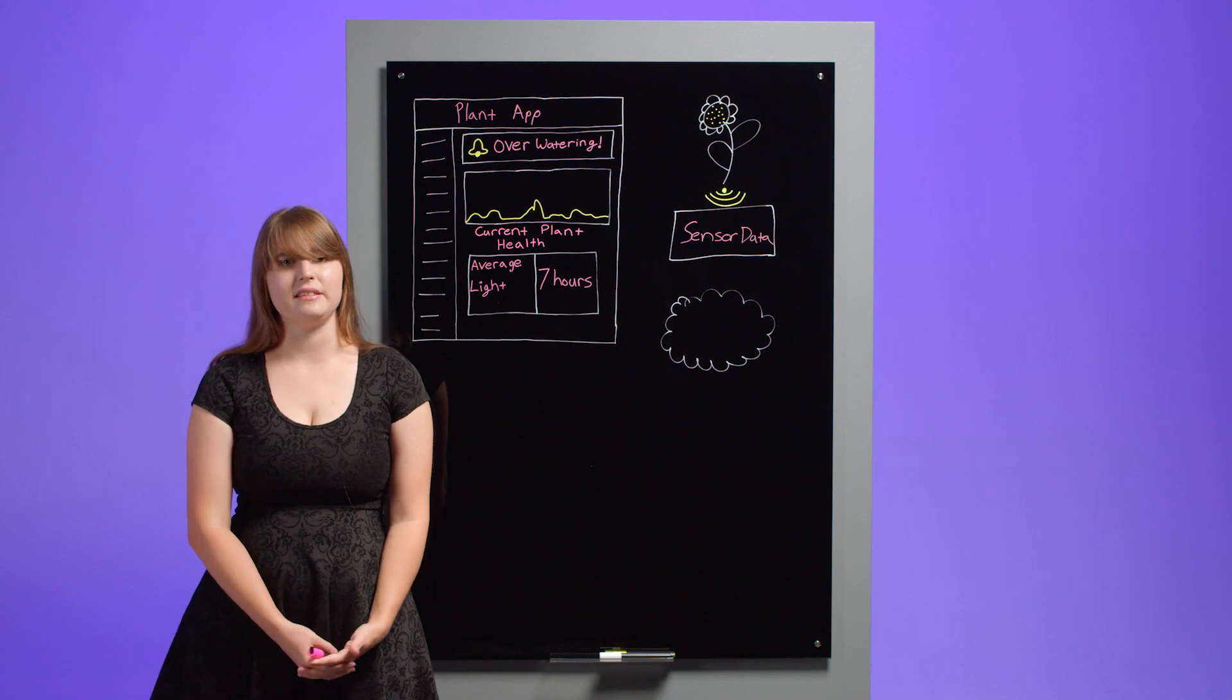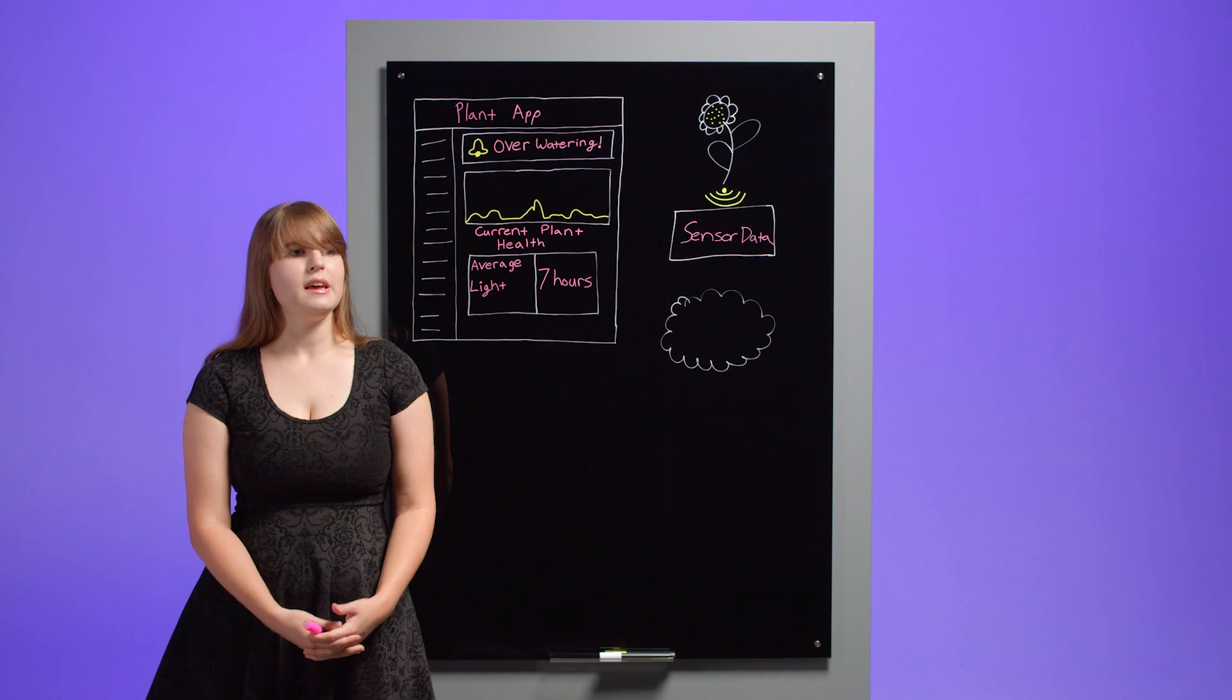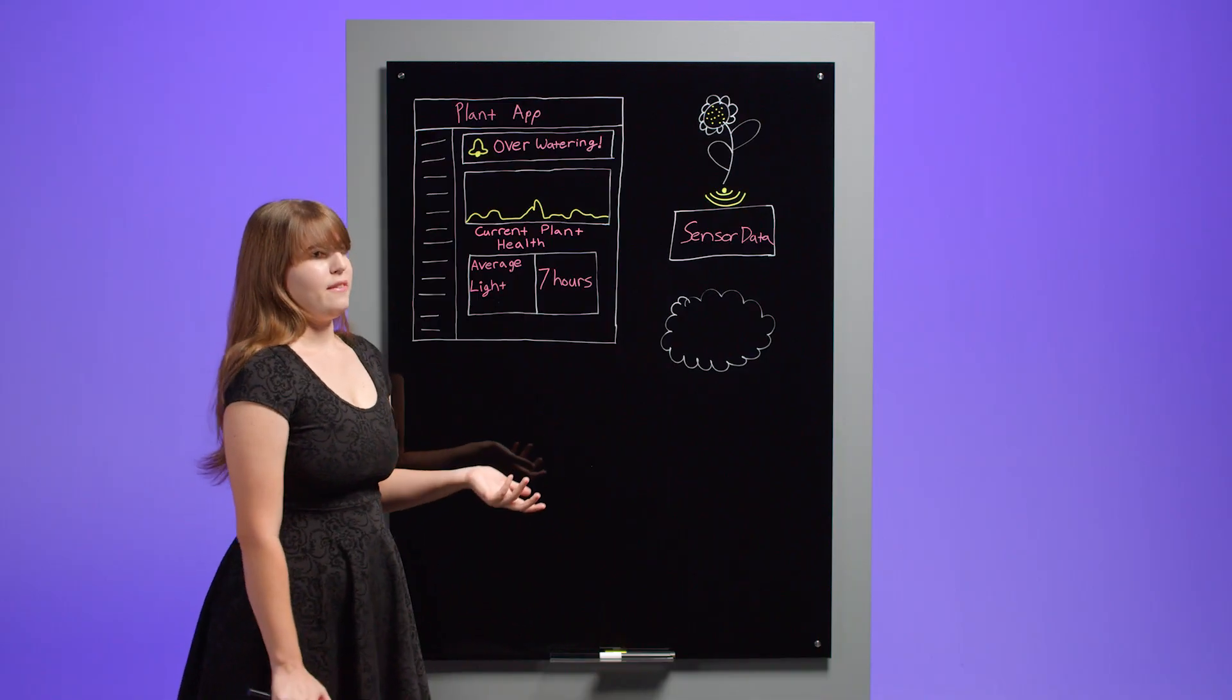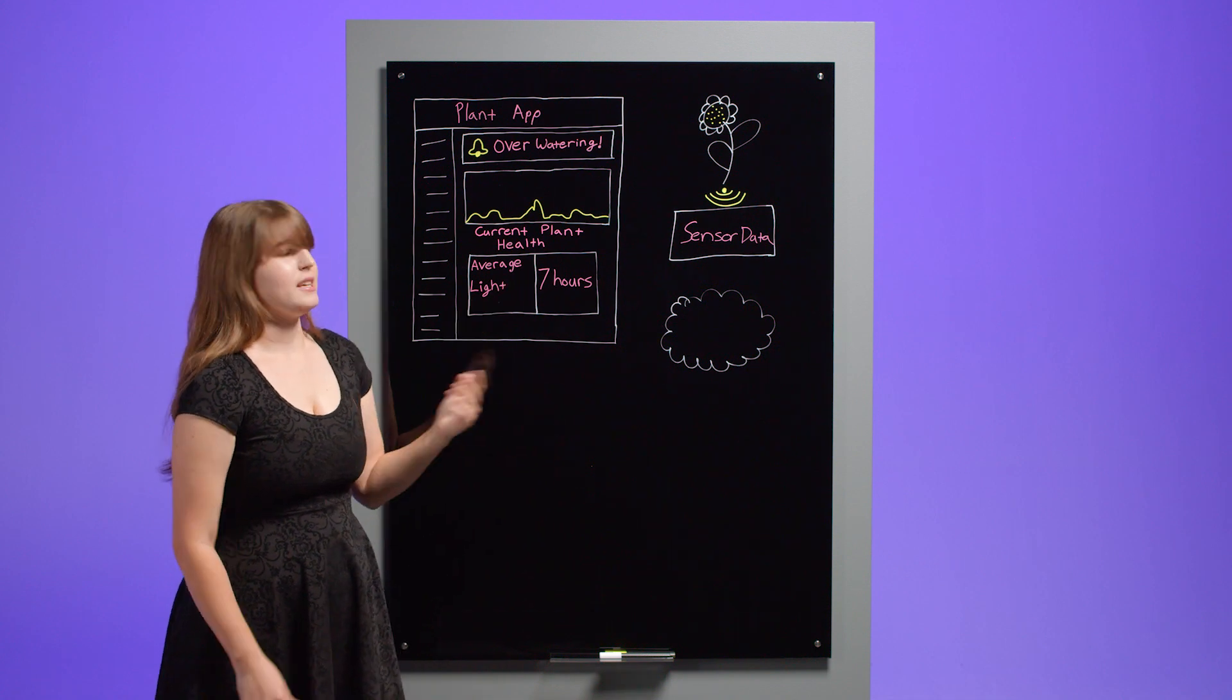To make ingesting the data easy, we also have Telegraph, our open source data ingestion agent. I use the Telegraph agent in getting my data into InfluxDB, and then I queried it back out with Flux. InfluxDB's time series platform comes with all the tools I need to make getting my data in and out easy.